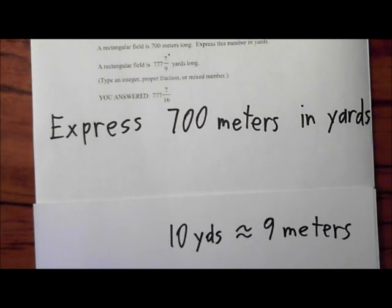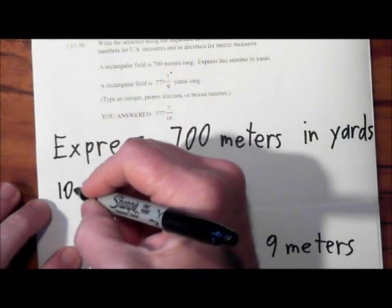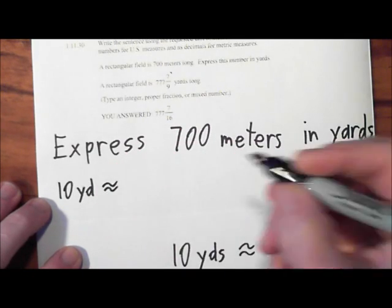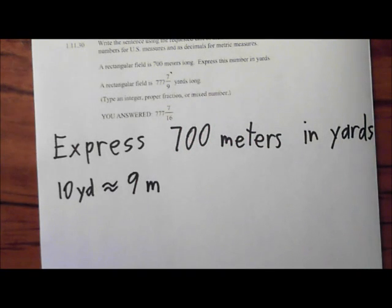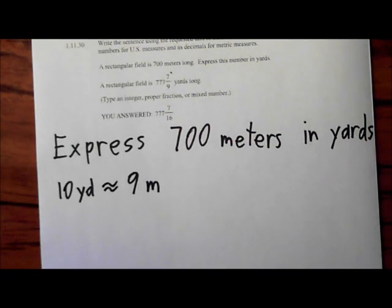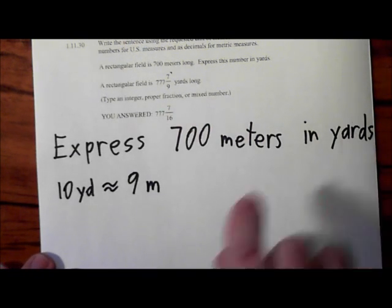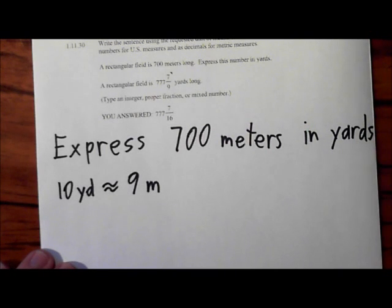So again, this is our equivalency: 10 yards is approximately equal to 9 meters. The reason this equivalency is important is it gives us the relationship between yards and meters. If 10 yards is the same as 9 meters, I can write this two different ways now.